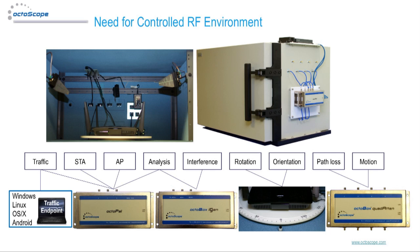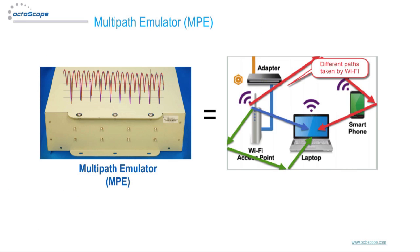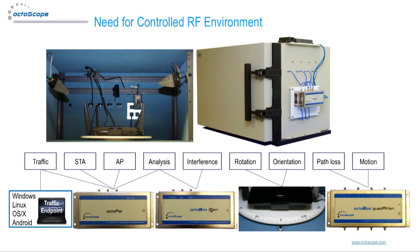Given the complexity of wireless testing and the number of variables impacting each test metric, it is crucially important for test and development engineers to work in an RF environment completely isolated from outside interference, where the test parameters can be individually controlled via test automation software. The Octobox API includes control over important parameters including traffic, interference, orientation, motion, path loss, and multipath. This slide shows the Octobox testbed devices and their corresponding functionality in emulating the variables for the tests.